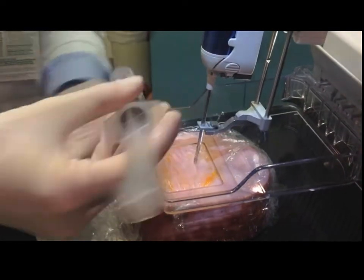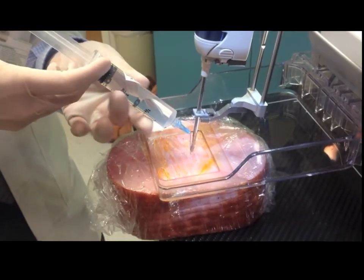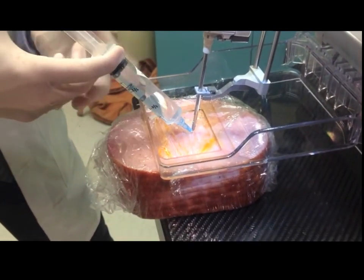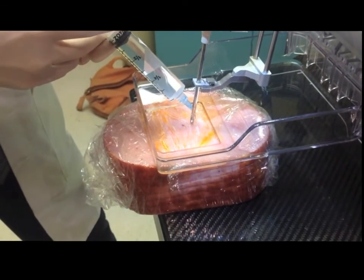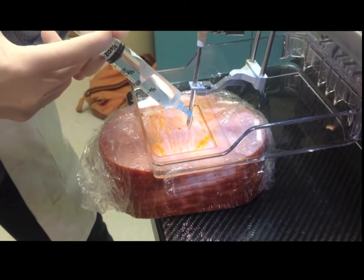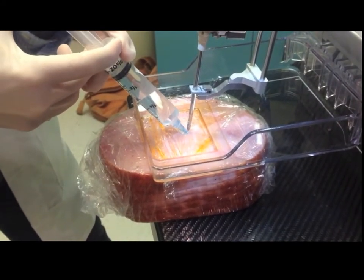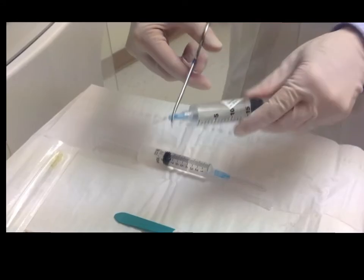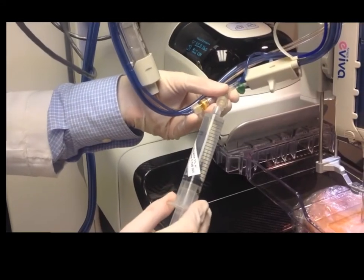We then change to 1% lidocaine with epinephrine and inject about another 5 cc's, maybe up to 7 cc's, this time deeper to make sure that you go to full needle depth and as you can see Jason here is injecting around the needle as we go. The remainder of that syringe 1% lidocaine with epi goes onto the back injection.